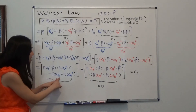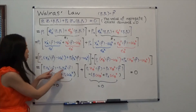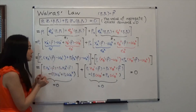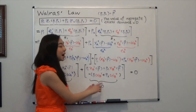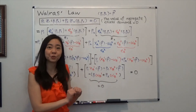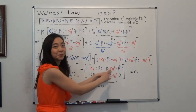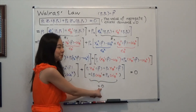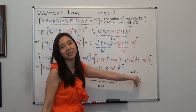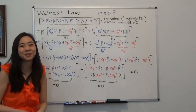Why is that? Because for Alice, after she sells whatever endowment she has, she uses all the money to buy her consumption bundle XA1 and XA2. And this is the same for Bob — after he sells his initial endowment, he uses all the money to buy his consumption bundle XB1 and XB2. So we know this term also has to be zero. We have proved that this term is zero plus zero, which is equal to zero. So we have proven Walras's Law. I hope this helps — I'll see you next time.